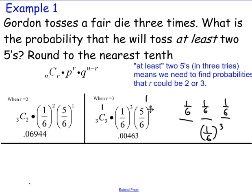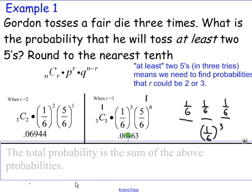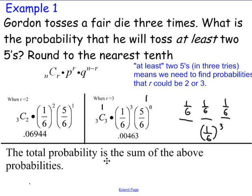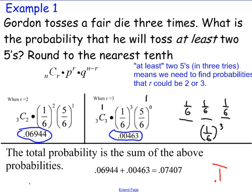Okay, now we did the formula 2 times. Or we used the formula 2 times rather. The total probability is the sum of the above probabilities. So you have to add what you got here and what you got here to get the total probabilities. And when you do that, you get this. Finally, just round it to the nearest tenth and you get .1.